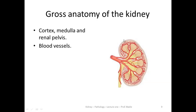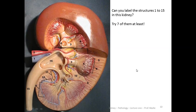In the gross anatomy, as you all know, we call this outer part the cortex, and we call the inner part the medulla. This part we call the renal pelvis. You have to see these blood vessels. So the basic structures are the cortex (the outer part), then you have the renal medulla, and then you can see the renal pelvis in this area, and then these are the blood vessels. This is a very important picture that you have to know and learn by heart.